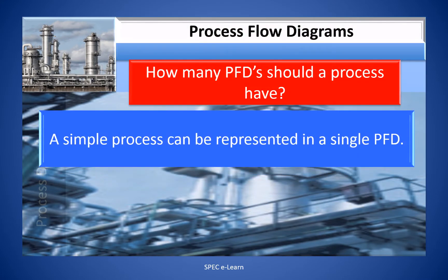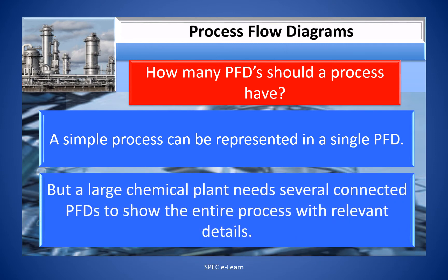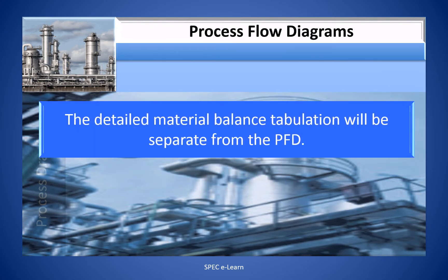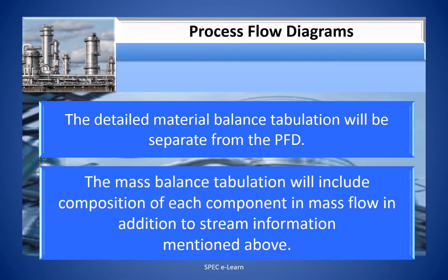How many PFDs should a process have? A simple process can be represented in a single PFD. But a large chemical plant needs several connected PFDs to show the entire process with relevant details. The detailed material balance tabulation will be separated from the PFD. The mass balance tabulation will include composition of each component in mass flow in addition to stream information as mentioned above.